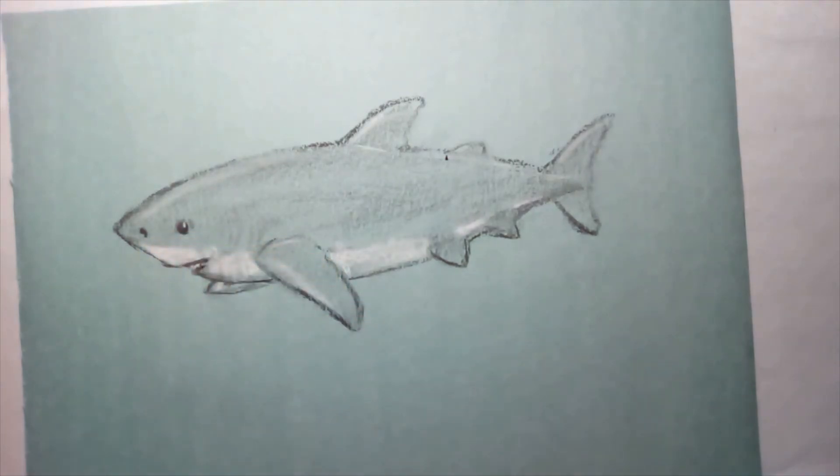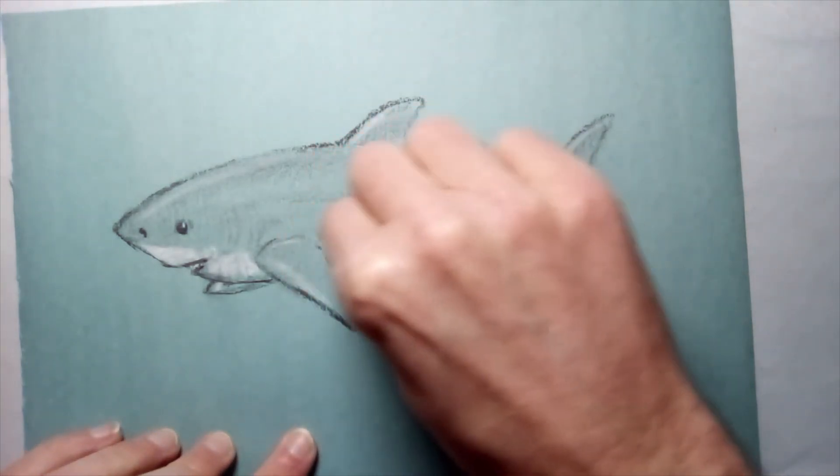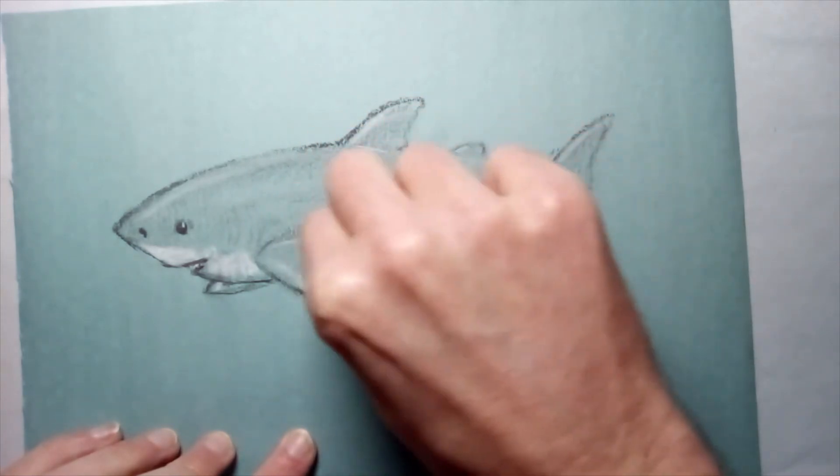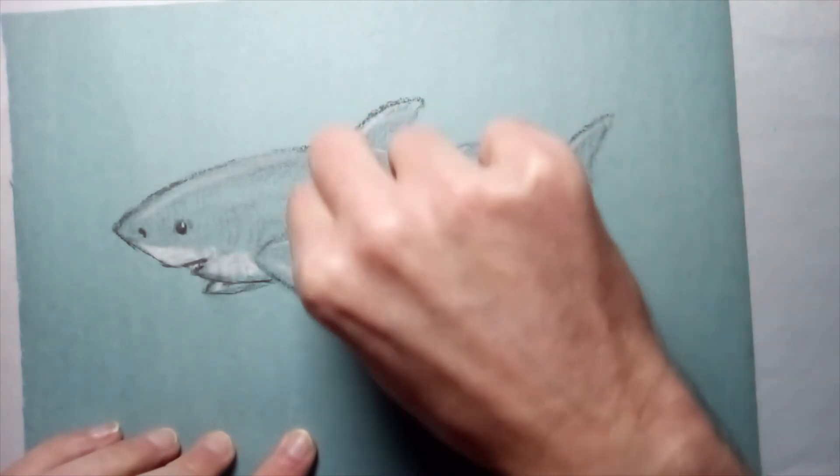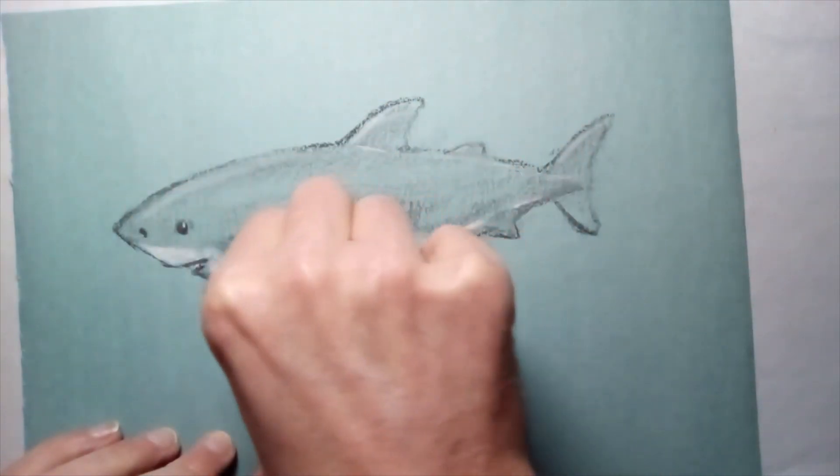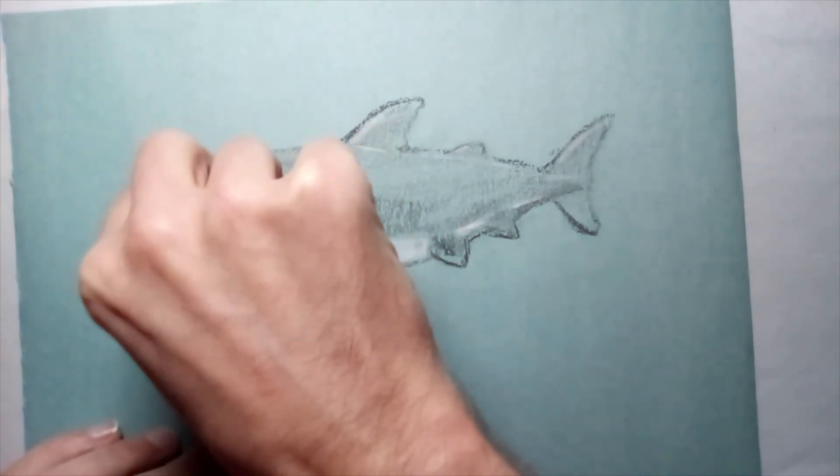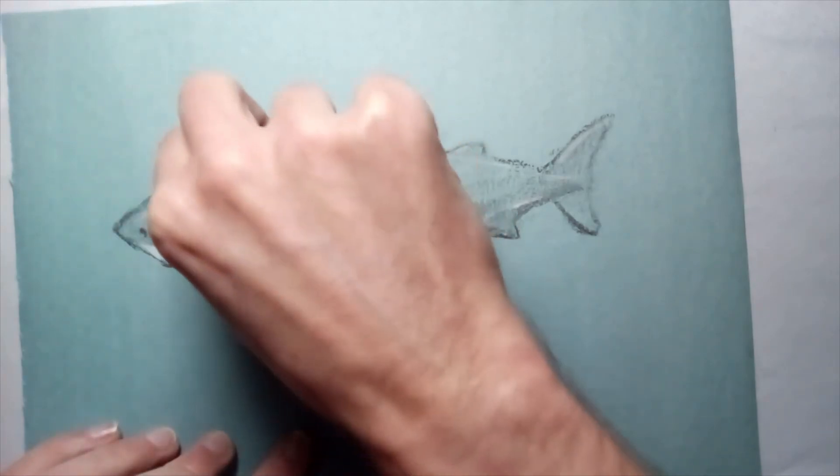But at the minute it still looks like a very flat drawing. What I'm going to try and do now is make it look like it's actually in the water, so I want this slightly darker side to my grey. And then what I'm going to do is build up a few extra layers. That's looking a bit better.